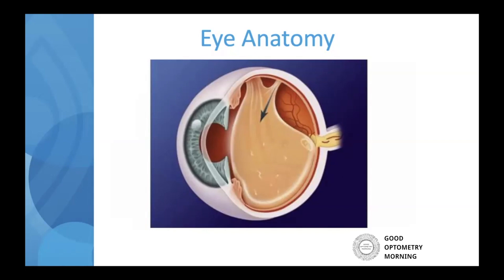A vitreous detachment is completely normal, so what's the concern? Well, 90% of the time when someone is developing a vitreous detachment, those attachments that were glued onto the retina will separate cleanly and there won't be a problem. But one out of ten — 10% of the time — when it pulls away, you'll get a retinal tear, and that is not good.